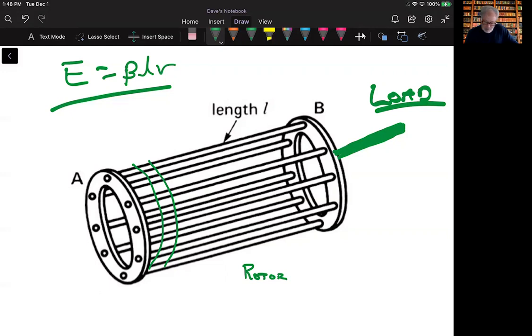Okay, well when the motor slows down, the relative speed between the magnetic field and the rotor bars is going to increase. You're going to cut those bars at a higher rate as the motor slows down.